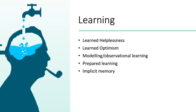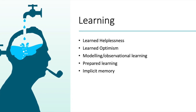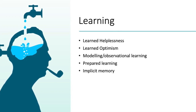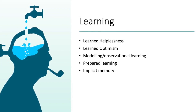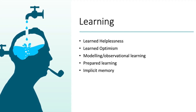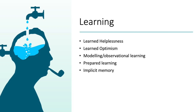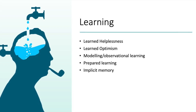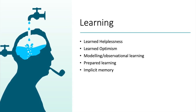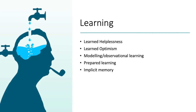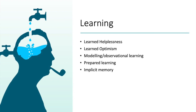Learned helplessness is when organisms encounter situations which they have no control over, leading people to attribute that they have no control and thus become depressed. You learn to believe that everything is against you, become helpless, and stop striving to overcome your circumstances. Learned optimism is the opposite — people face stress or difficulty but nevertheless display optimism, ensuring better functioning.